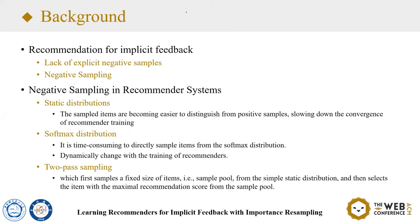Many negative sampling methods are usually based on static distributions, such as the uniform distribution and popularity-based distribution. Although they are efficient to sample items, they are not adaptive to the update of recommendation models. As a consequence, the sampled items are becoming easier to distinguish from positive items, slowing down the convergence of recommendation training.